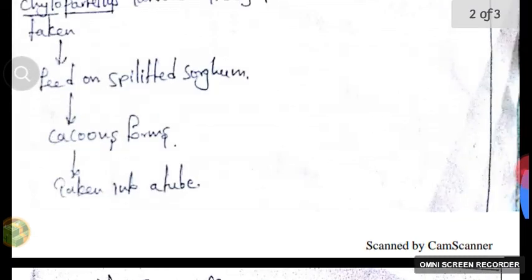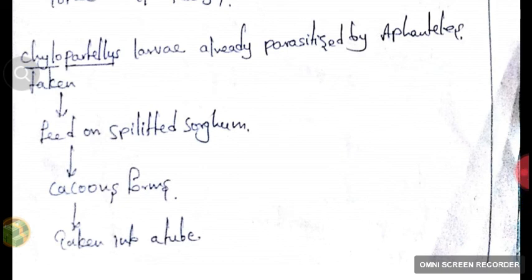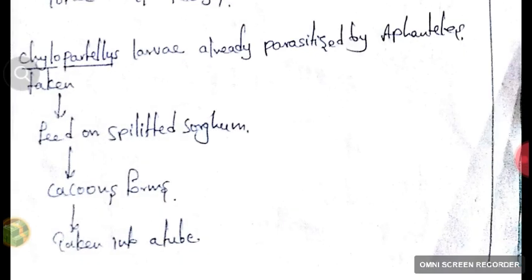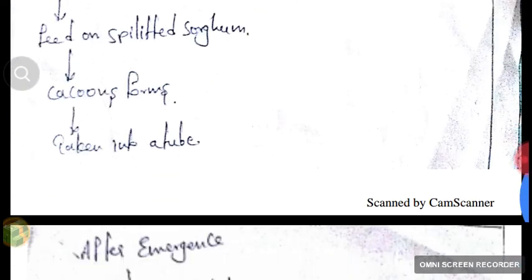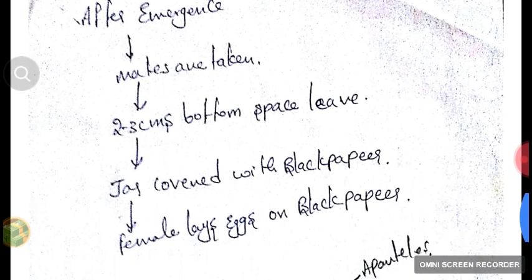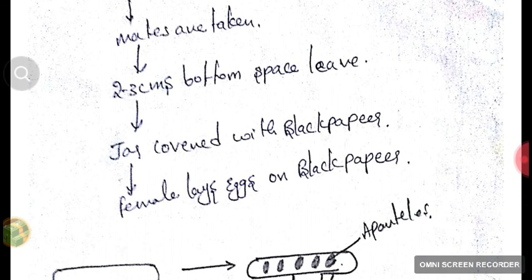Let's discuss the mass multiplication of Apantheles flavipes in detail. Chylopateles, already parasitized by Apantheles flavipes, is placed in slitted sorghum. The Chylopateles feeds on the sorghum, so Apantheles also gets fed and forms cocoons. We extract the cocoons into a tube and wait for emergence. After emergence, we take the mating pairs — one male and one female — place them in a jar, leave two to three centimeters of bottom space, and cover the jar with black pepper material. The female lays eggs on the black pepper; we collect those eggs for further multiplication. We can also streak the jar with honey as a carbohydrate source, diluted to a range of 20 to 50 percent.